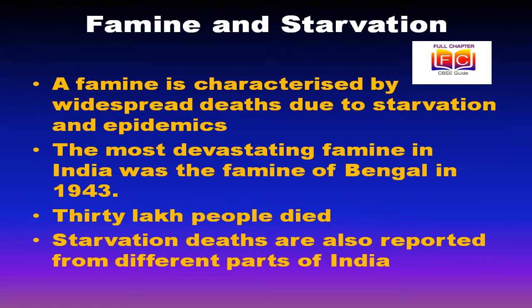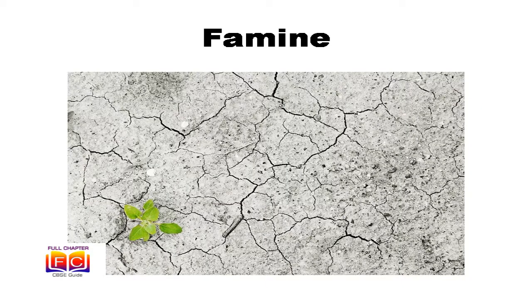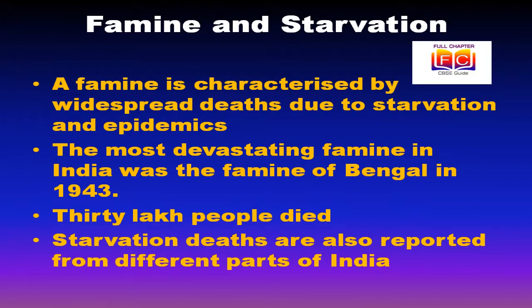A famine is characterized by widespread deaths due to starvation and epidemics caused by forced use of impure water or decaying food, and loss of body resistance due to weakening from starvation. The most devastating famine in India was the Bengal Famine of 1943, in which 30 lakh people died and the price of rice, the staple diet, increased sharply. No famine has occurred in India since independence, but famine-like conditions still prevail in places like Kalahandi and Kashyapur in Odisha, and starvation deaths are reported in Baren district of Rajasthan, Palamo in Jharkhand, and other remote areas.